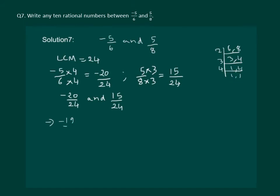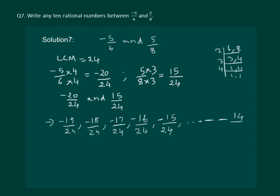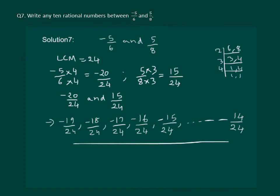Clearly, minus 19 by 24, minus 18 by 24, minus 17 by 24, minus 16 by 24, minus 15 by 24, and so on till 14 by 24, all lie between minus 20 by 24 and 15 by 24 — and hence between minus 5 by 6 and 5 by 8. So we can say all these numbers are rational numbers between minus 5 by 6 and 5 by 8.